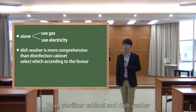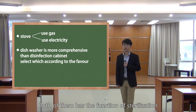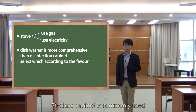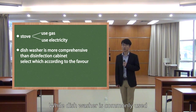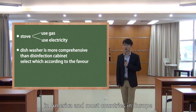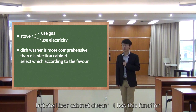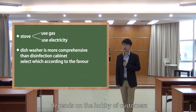Next, sterilizer cabinet and dishwasher. Both of them have the function of sterilization. Normally, we choose one of them in the kitchen. Sterilizer cabinet is commonly used in most countries in Asia, including China, while dishwasher is commonly used in America and most countries in Europe. The only difference is that dishwasher has the function of washing, but sterilizer cabinet doesn't.